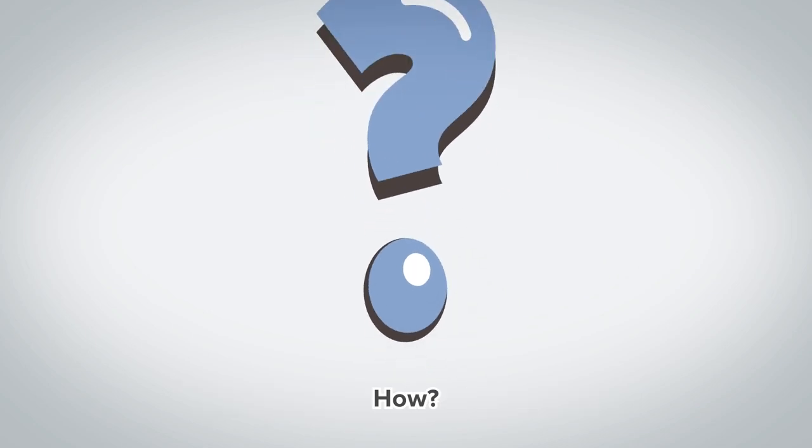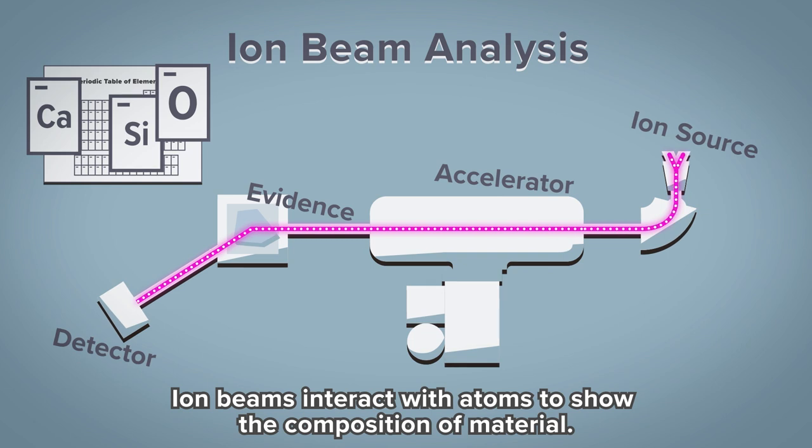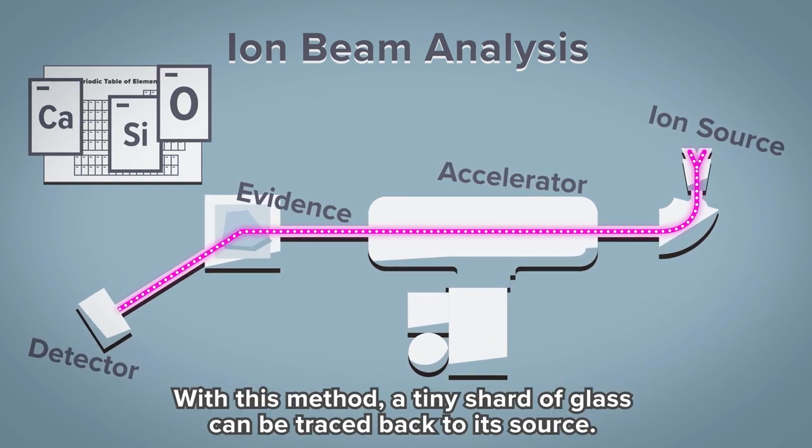How? Ion beams interact with atoms to show the composition of material. With this method, a tiny shard of glass can be traced back to its source.